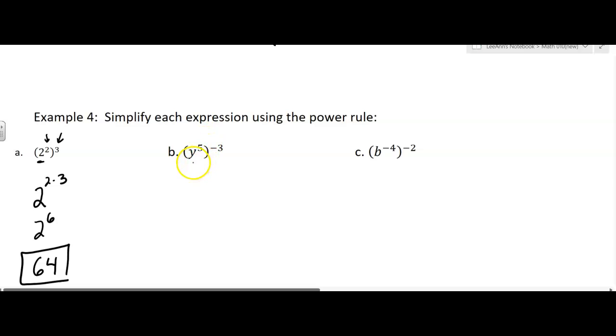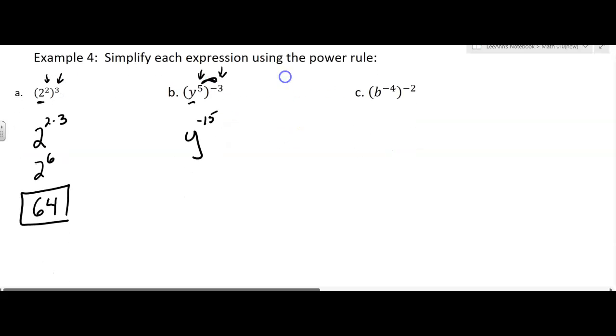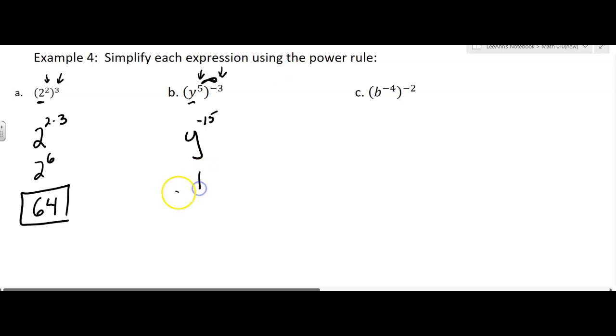Now what's happening here on b? We've got a base of y, an exponent of five, and then an outer exponent of negative three. So what I have to have is y to the negative 15. I'm going to be multiplying those. So power to a power, you multiply them. But I don't want my answer to have a negative exponent, so I'm going to rewrite that as one over y to the 15.